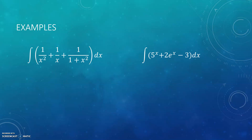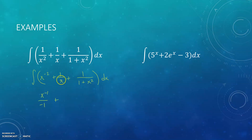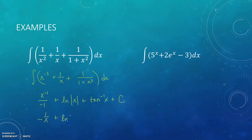Here are some examples mixing up all the different types. I'm going to rewrite the first term with a negative exponent — so that would be negative 2. I'm going to leave the 1 over x as is, and leave 1 over (1 plus x squared) as well. When I take the antiderivative, I add 1 to the exponent for the first term; the 1 over x term gives natural log of the absolute value of x; and the last term is tangent inverse of x. I only need one plus C. Simplified: negative one over x plus natural log of the absolute value of x plus tangent inverse of x plus C.